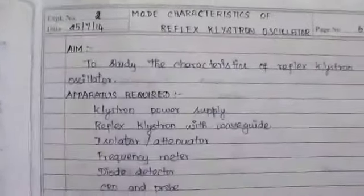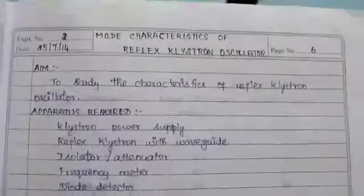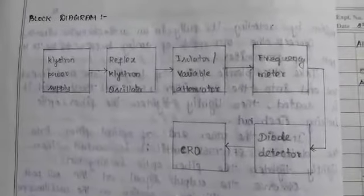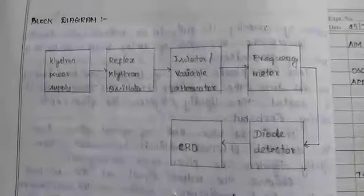This is the first experiment: mode characteristics of the Reflex Klystron oscillator. The block diagram shows the Klystron power supply, then the Reflex Klystron oscillator, then an isolator or attenuator, a frequency meter, followed by a diode detector and CRO. We have the same setup here physically: the Klystron power supply, the Reflex Klystron oscillator, the isolator, frequency meter, diode detector, and the CRO.